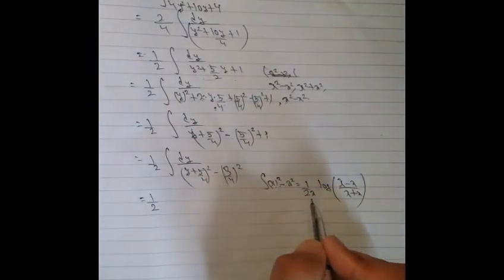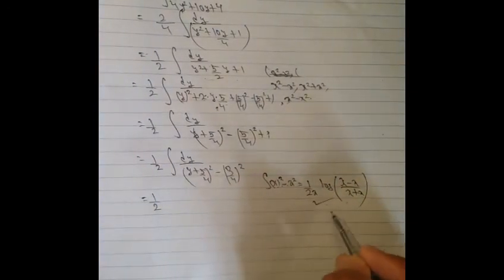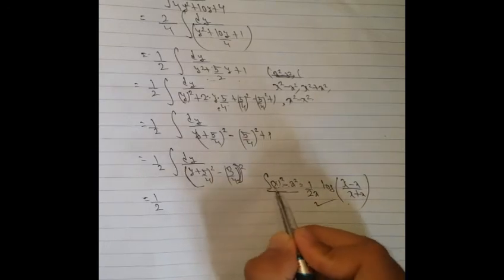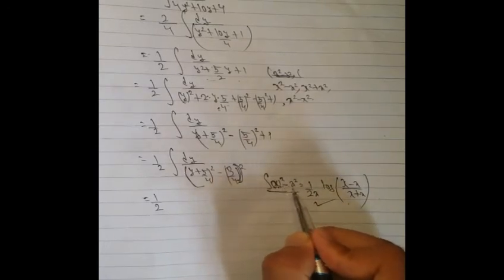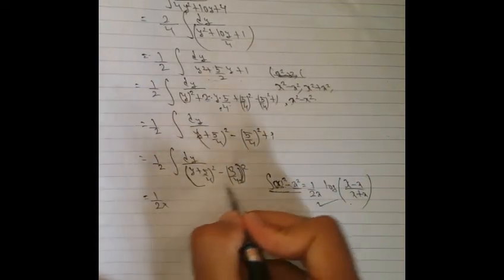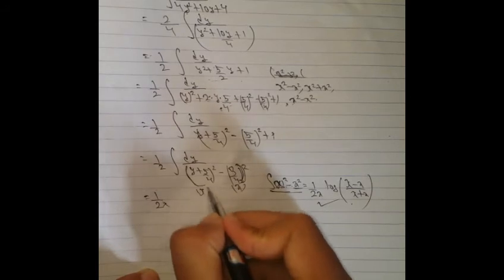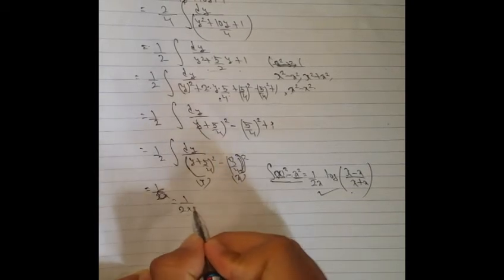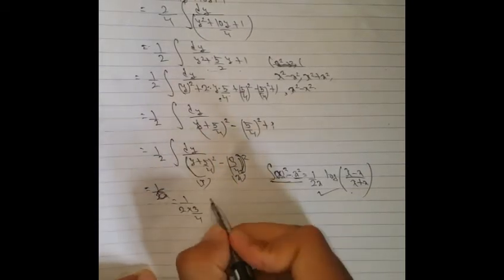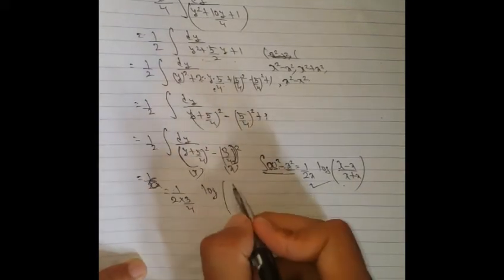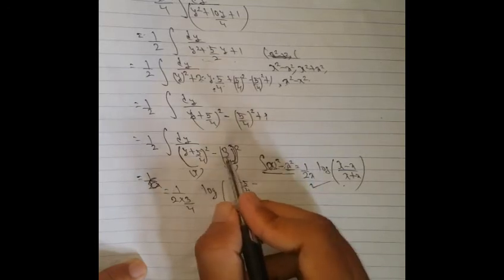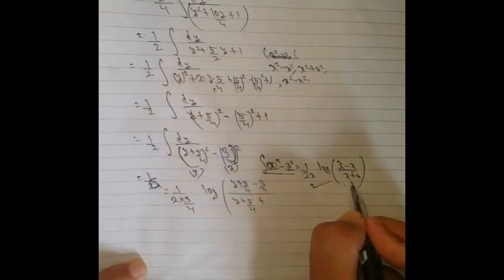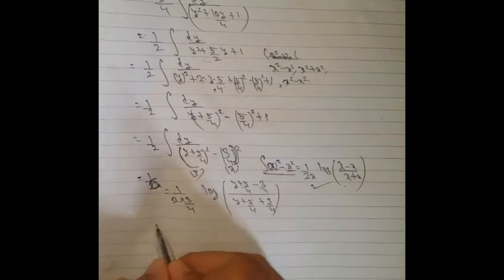The integral of 1/(x² minus a²) equals (1/2a) log|(x minus a)/(x plus a)| plus C. This is the standard formula. Applying it here, x corresponds to (y plus 5/4) and a corresponds to (3/4). So the result is (1/2) times (1/(2·(3/4))) log|(y plus 5/4 minus 3/4) divided by (y plus 5/4 plus 3/4)| plus C, which equals (1/3) log|(y plus 1/2) divided by (y plus 2)| plus C.